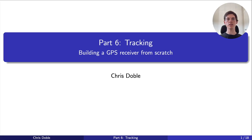This is the sixth video in a series where I cover everything you need to know to build a GPS receiver from scratch. In the previous video we spoke about the acquisition stage that determines which satellites we can hear and the parameters that result in the strongest signals. After acquiring a satellite we enter the tracking stage, which is the topic of this video.